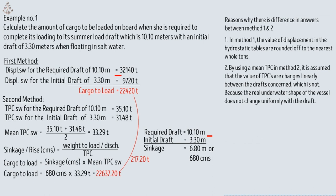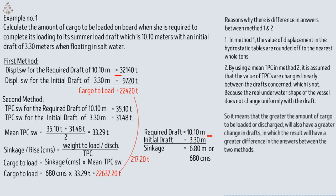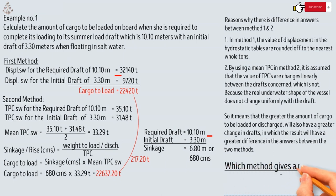Because the real underwater shape of the vessel does not change uniformly with draft, the greater the amount of cargo to be loaded or discharged, the greater the change in drafts, resulting in a greater difference in answers between the two methods. The big question is which method gives a more accurate answer — we will see this in the next problem.